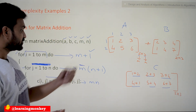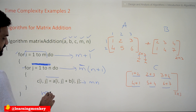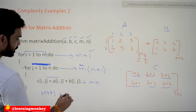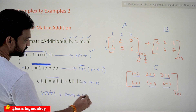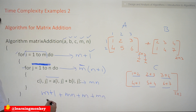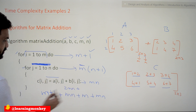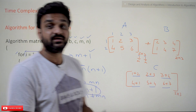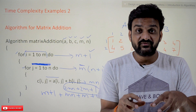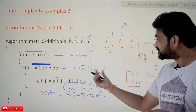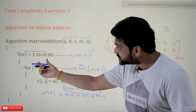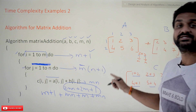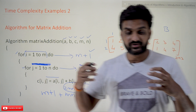The total time complexity is the sum of all components: (m+1) for the outer loop condition, m×(n+1) for the inner loop condition, and m×n for the body assignment. Summing them gives 2mn + 2m + 1. This is the time complexity of the matrix addition algorithm. The key point is how nested loops multiply execution counts: m into (n+1) comes from entering the inner loop m times, each executing n+1 times.